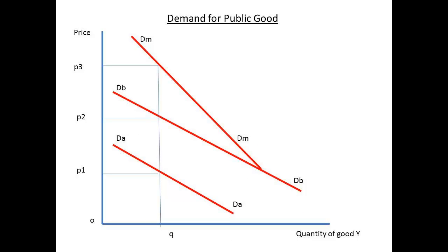Now consider the demand for a public good. Each additional unit of a public good benefits everyone, so we shall add the valuations to get the demand curve — the measure we are seeking is how much society is willing to pay. The demand curve for individual A is DADA and for individual B is DBDB, giving a total demand curve of DMDM. For quantity Q, if A is willing to pay 0P1 and B is willing to pay 0P2, then the price society is prepared to pay is 0P3, which equals 0P1 plus 0P2.